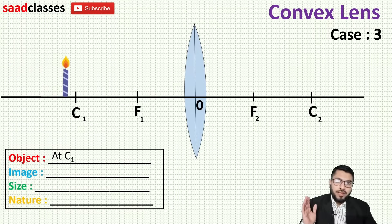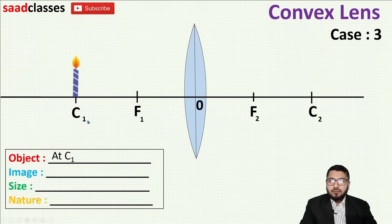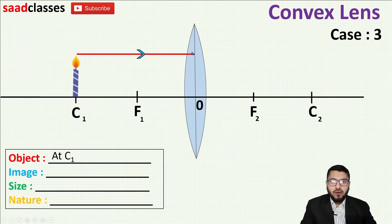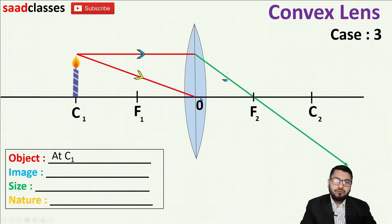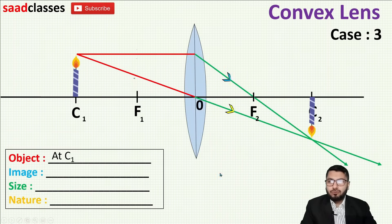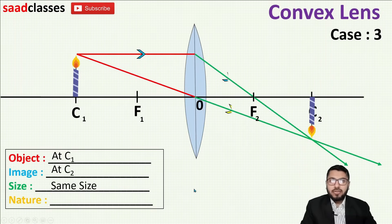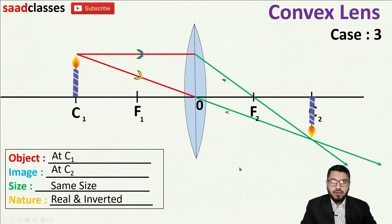In case number three, I move my object closer and place it at C1, the center of curvature. Applying the same two rules: a ray parallel to the principal axis passes through focus after refraction; the second ray passes through the optical center and goes undeflected. These two rays cut at C2, so the image is formed exactly at C2. The size of the object and the size of the image are the same. The nature is real and inverted.